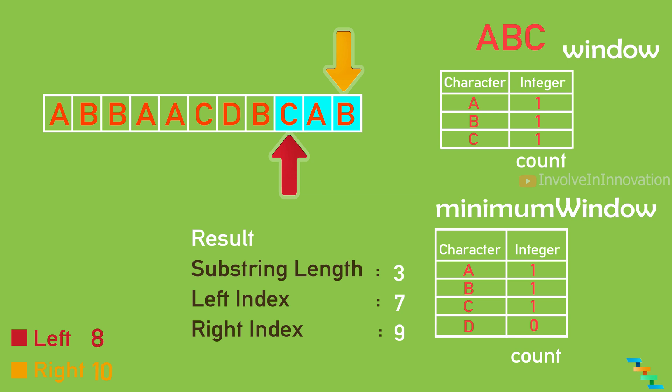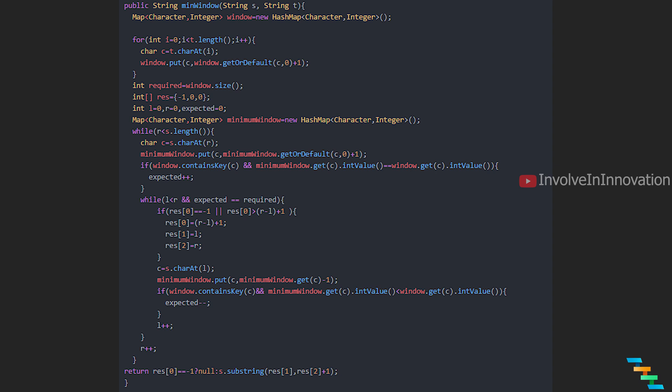We will see a Java code for this algorithm. First declare a hash map to store string t. Iterate over the characters in t, get the current character and load it to the window hash table, where the key is the character and the value is the character count. If the character is already present, get the value; if not, return 0 and increment it by 1. Once the window hash table is loaded, get the record count — the number of entries in the window hash table. Create a result array with three values: index 0 is the string length marked as -1, and the left and right indices marked as 0.